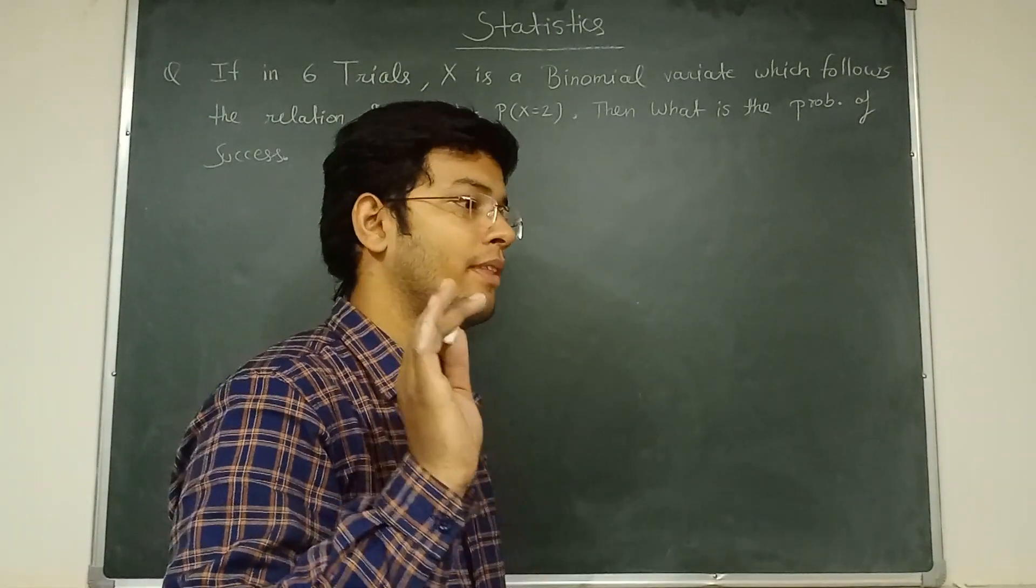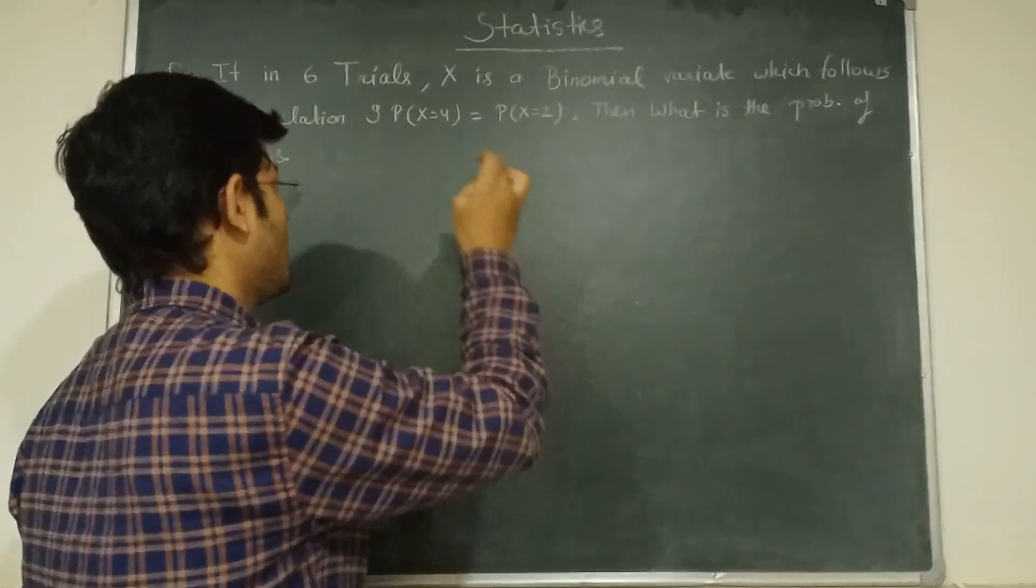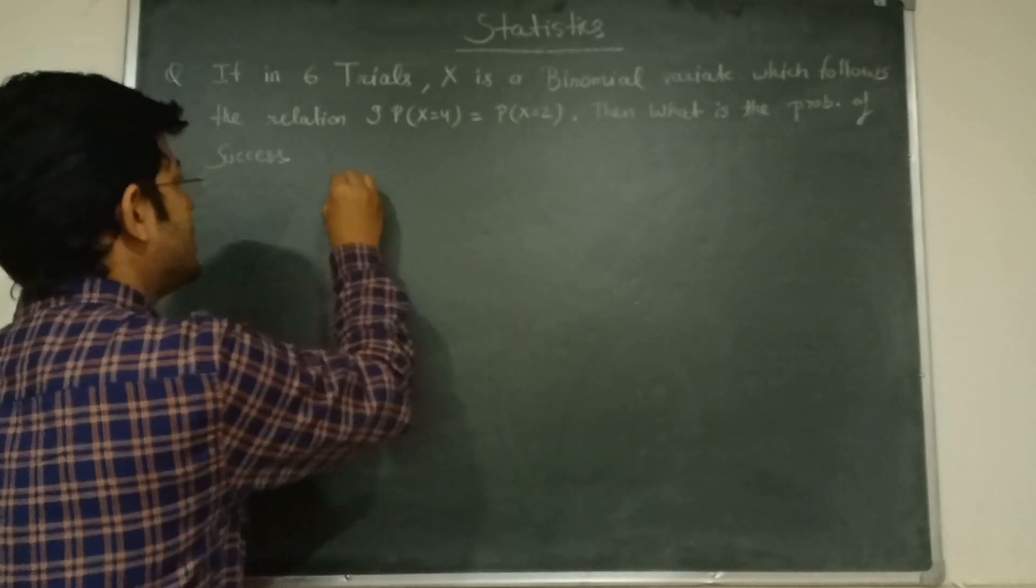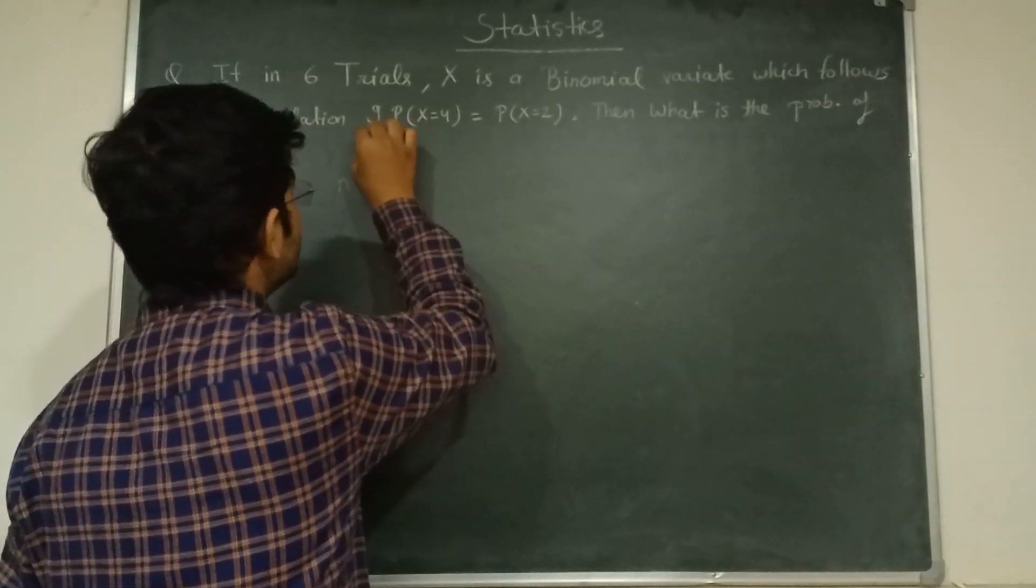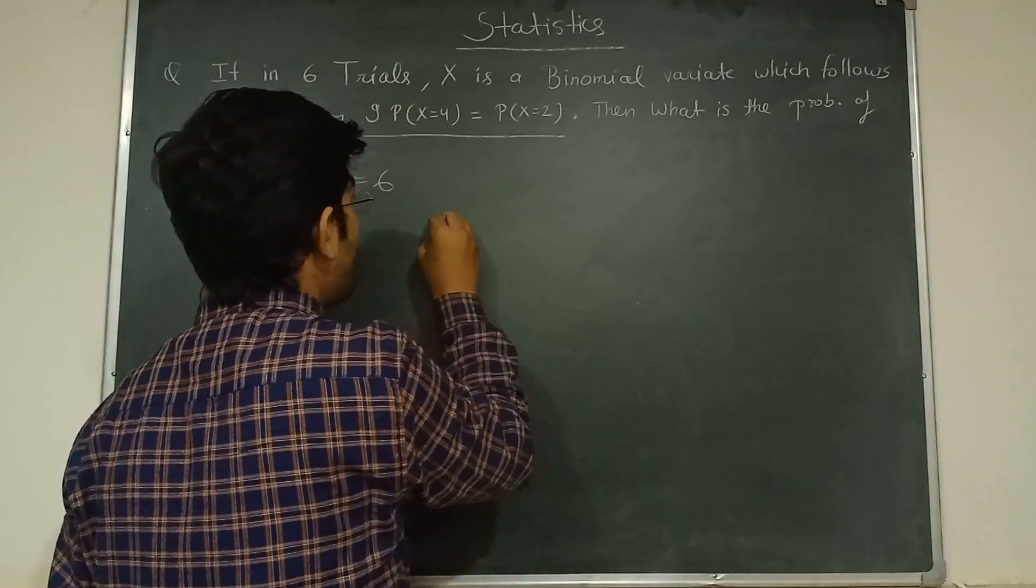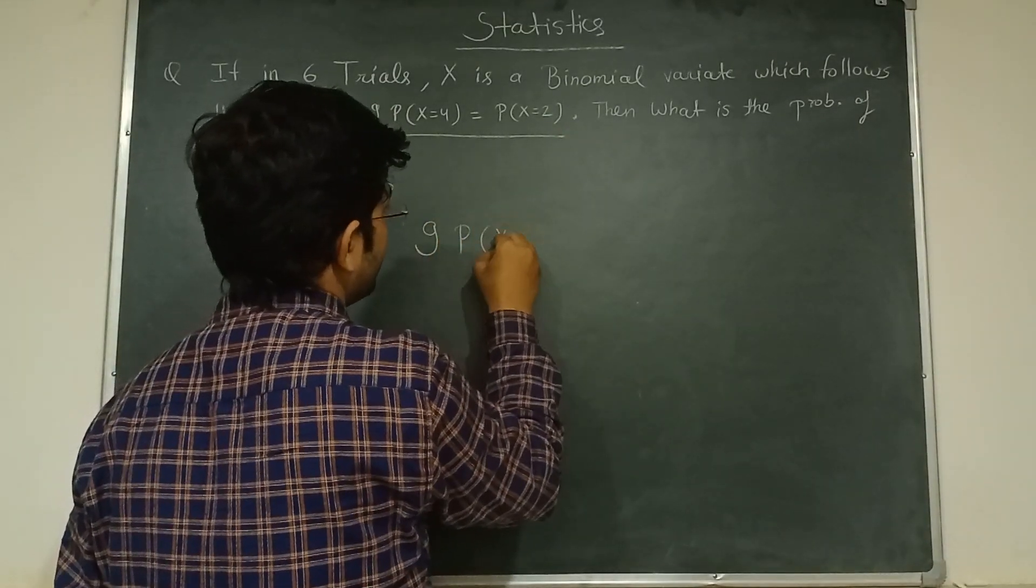What is given in this question? Firstly, we have given n is equal to 6, and we have given this relation. We write this relation because it is very important for us.